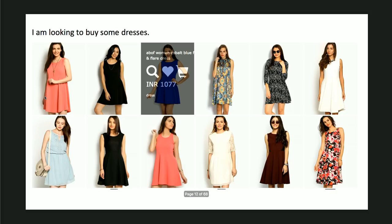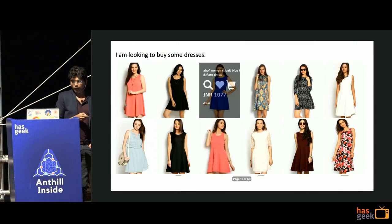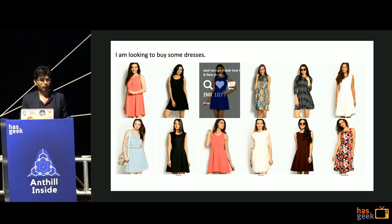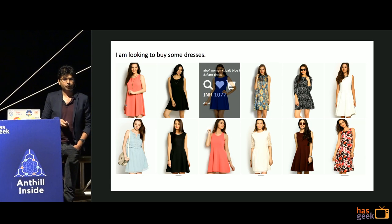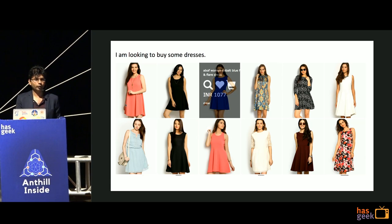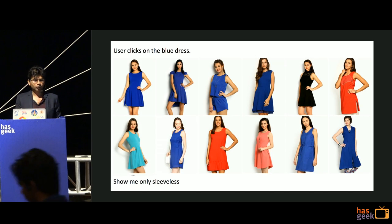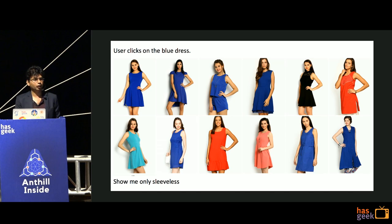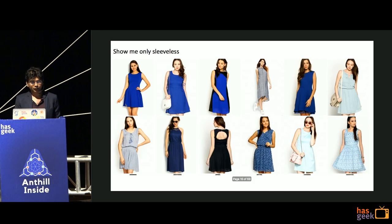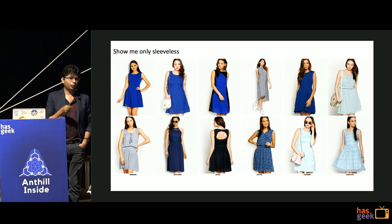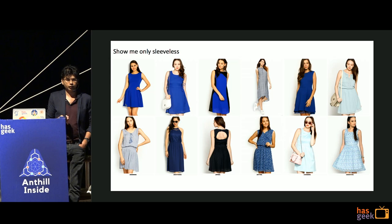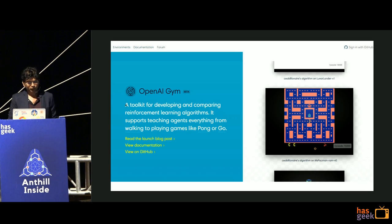Another example is recommendation systems - some work in our labs tries to cast a recommendation system as a deep RL problem. Say you're looking to buy dresses: you get some items, the user clicks on a blue dress, it shows blue dresses, then the user says 'show me only sleeveless' and it picks up sleeveless dresses. You're interacting with a catalog, making actions, the system shows results, and you get a reward when someone adds an item to the cart. This can be cast as a deep RL problem.